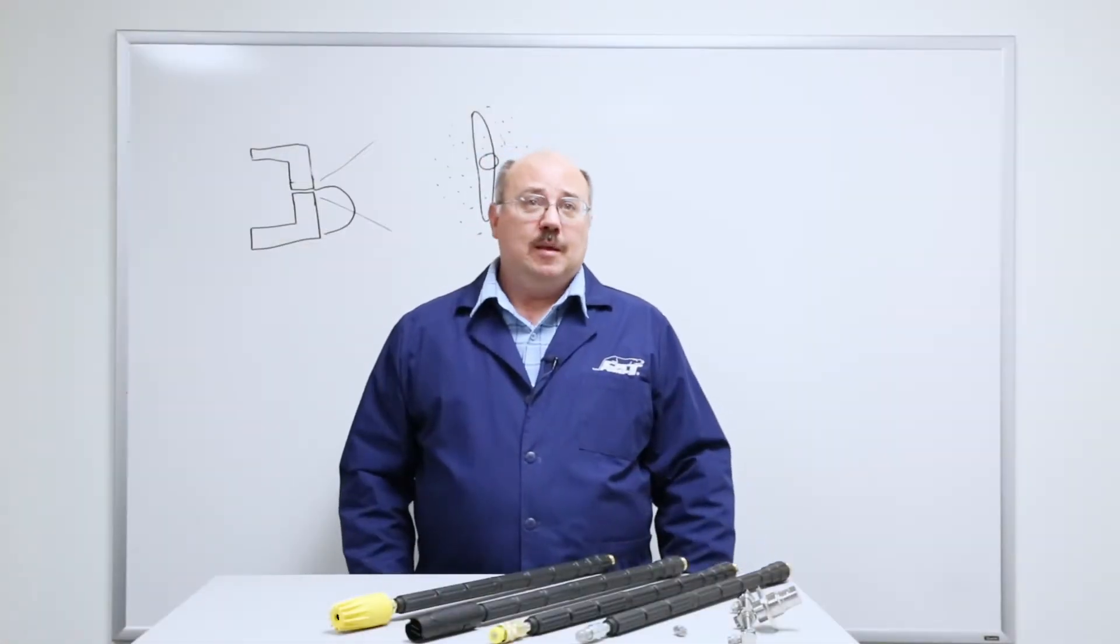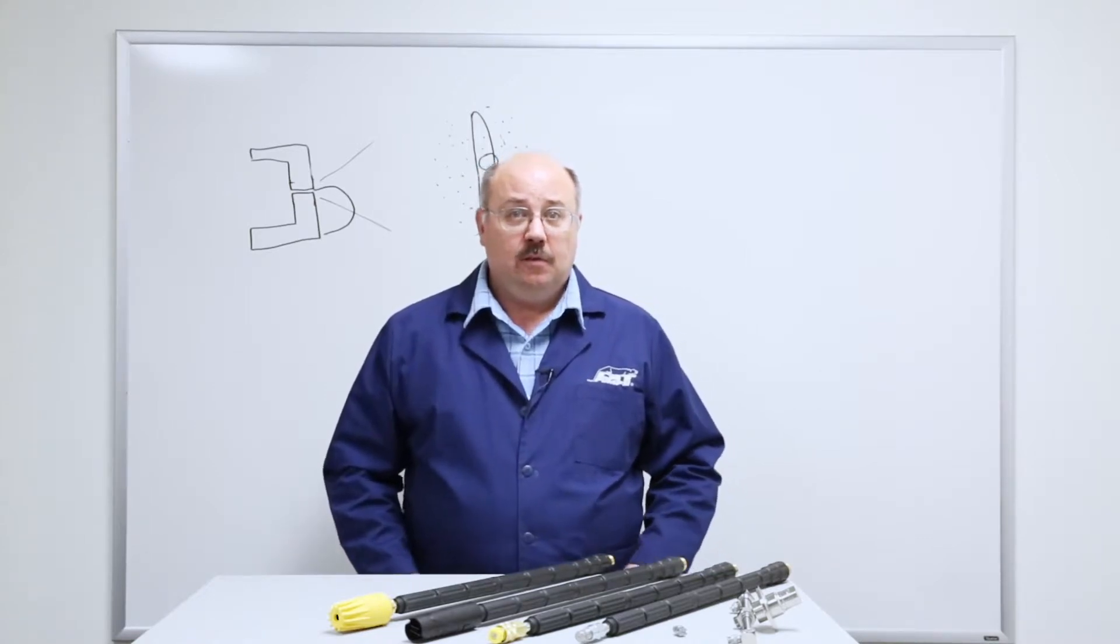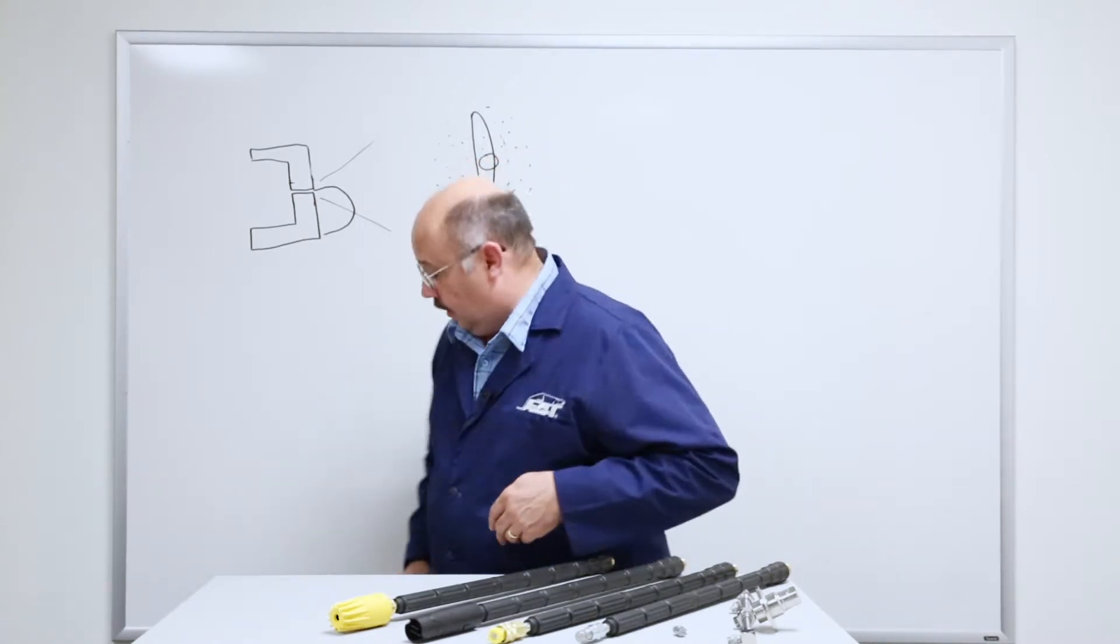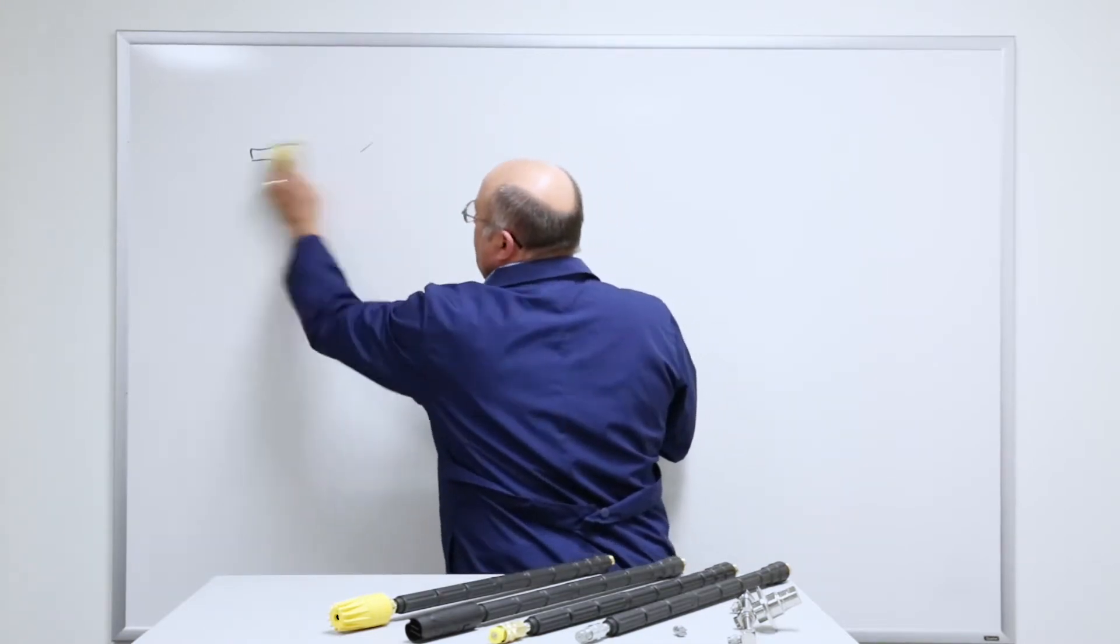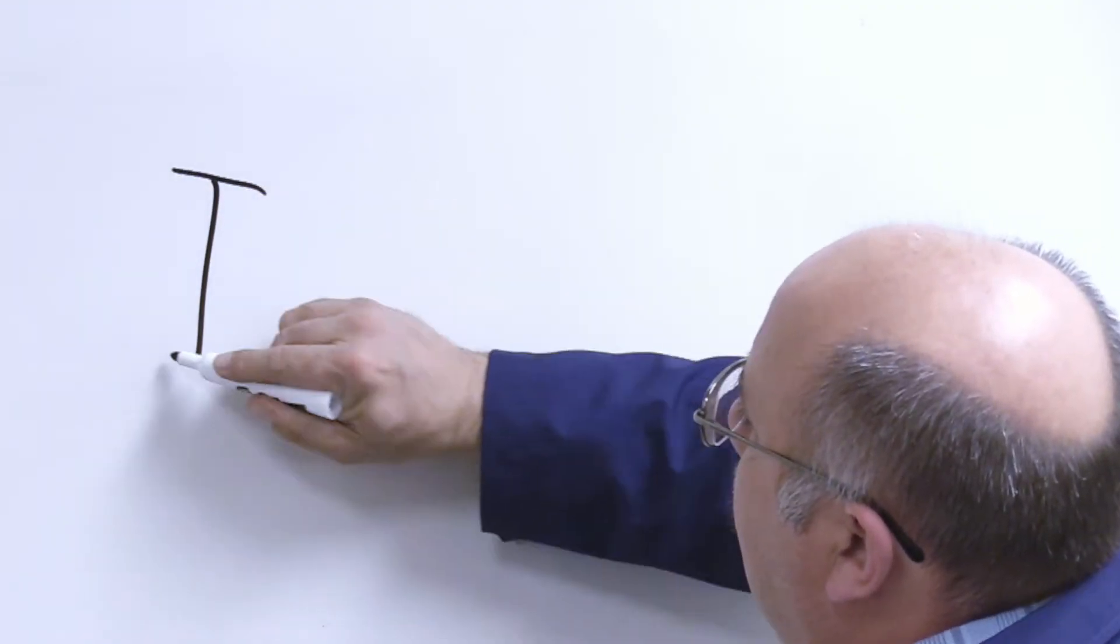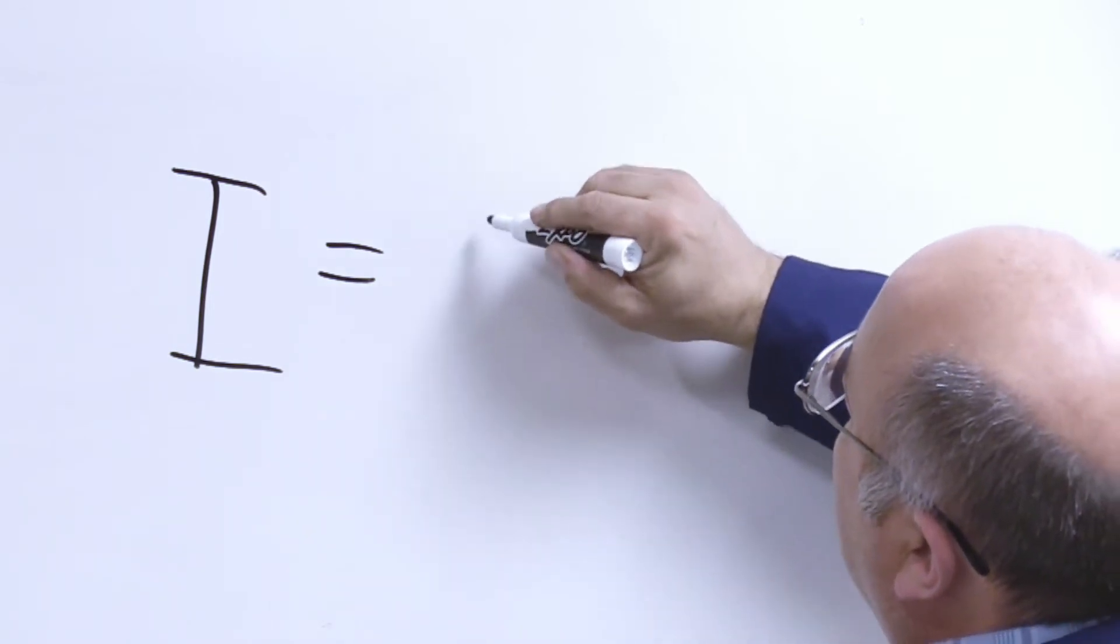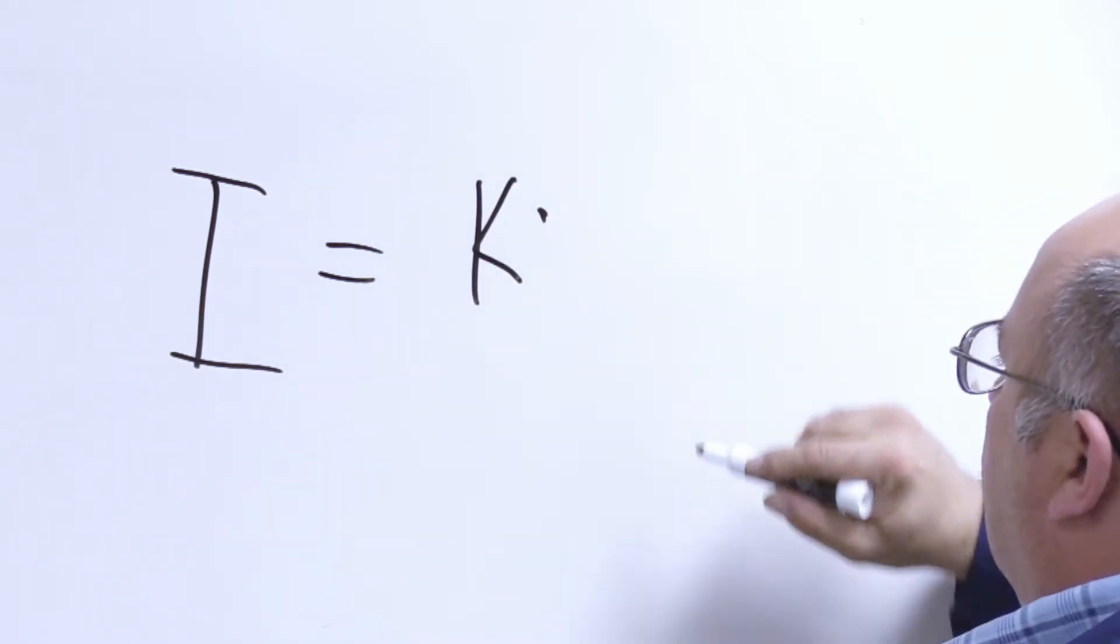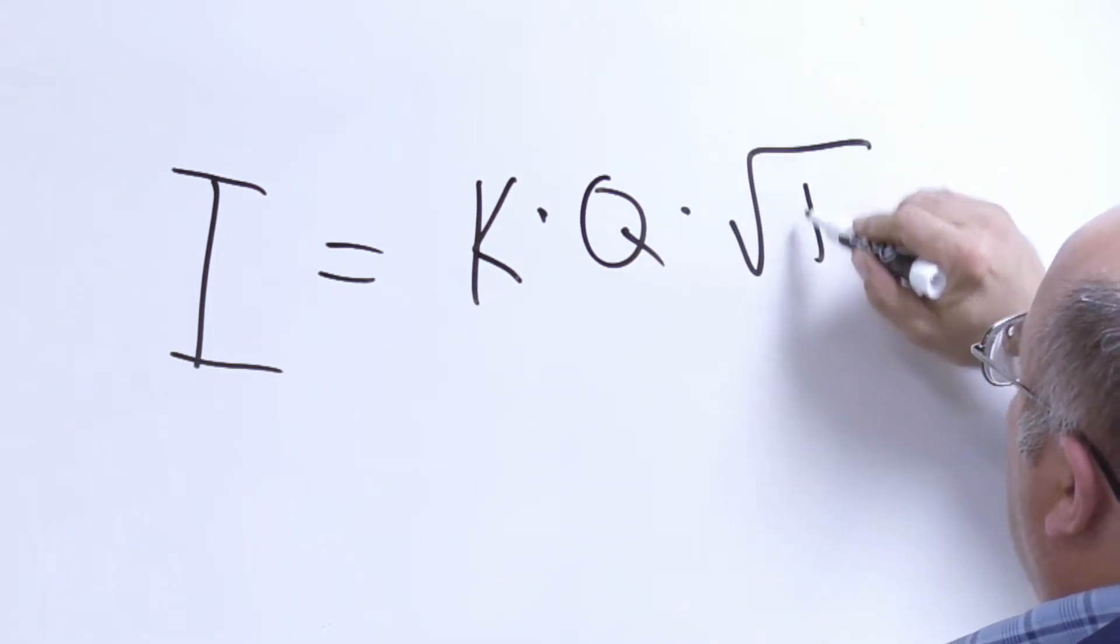The last thing to talk about is impact. A lot of people want to know, what's the impact of my nozzle? We'll start with the theoretical impact of a zero degree nozzle. There's a formula called I, which stands for impact. Impact equals k, which is a constant, times q (flow), times the square root of p (pressure).